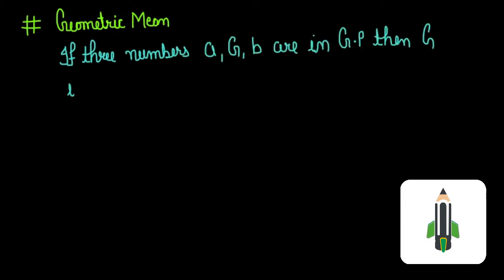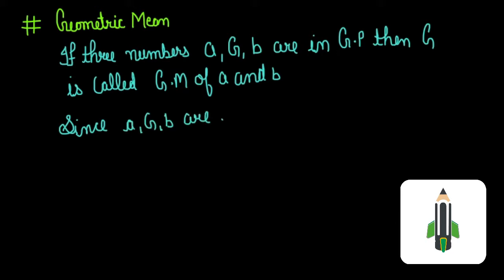Geometric mean. If three numbers A, capital G, B are in GP, then G is called geometric mean of A and B. Since A, G, B are in GP...